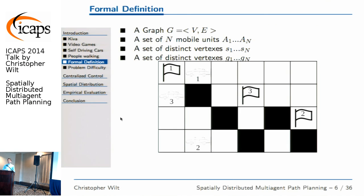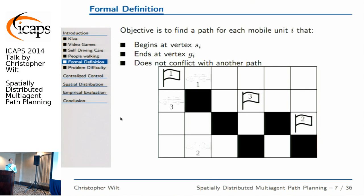Now that we have an intuitive sense of what this might be like, I'm going to introduce it more formally. What we have is a graph — a standard collection of vertices and edges — and a collection of N mobile units moving around the graph, analogous to people, cars, or units in a video game. Each mobile unit needs a start and a goal, which are distinct vertices in the graph. The objective is to find a path through the graph for each mobile unit that begins at its start vertex, ends at its goal vertex, and at no point in time do two mobile units share a vertex, which would be analogous to crashing.